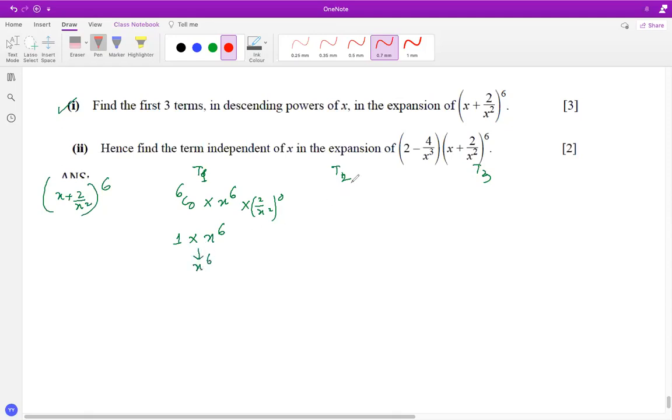The next step is T2. For this, plug r as 1, so 6C1 times x to the power 6 minus 1 times 2 over x squared to the power 1. When you simplify, 6C1 is 6, and x to the power 5 times 2 over x squared becomes 12x to the power 3. You can see the answer is x to the power 6, 12x cubed, and so on, automatically going as descending power.